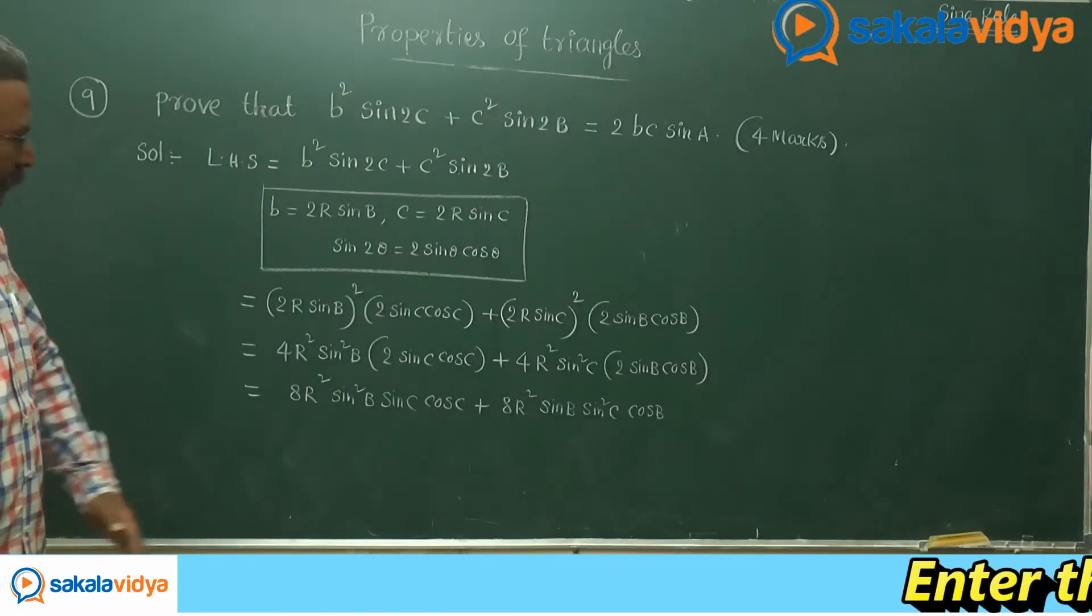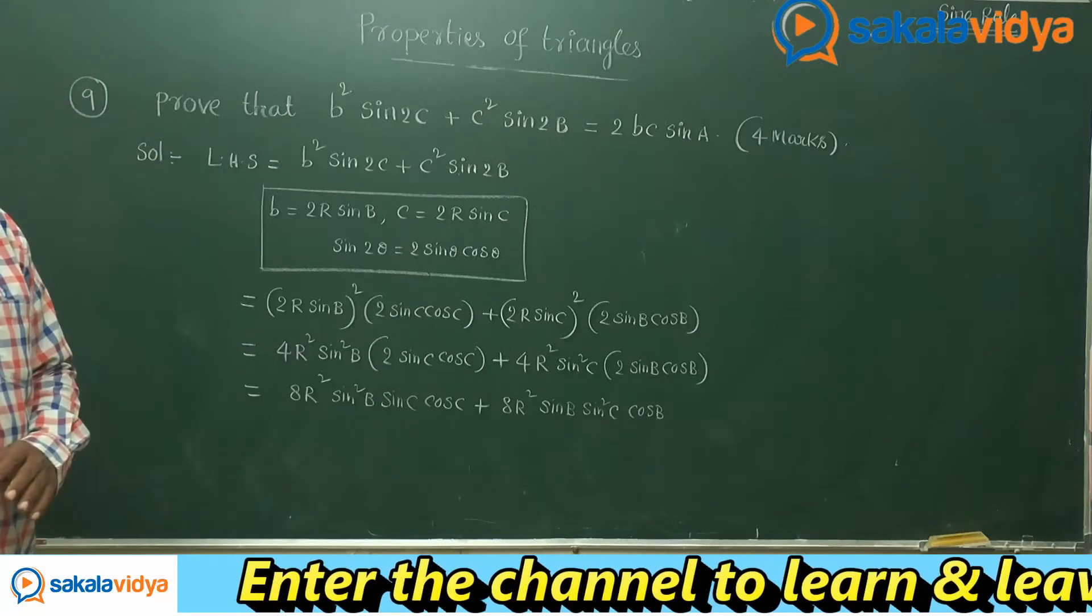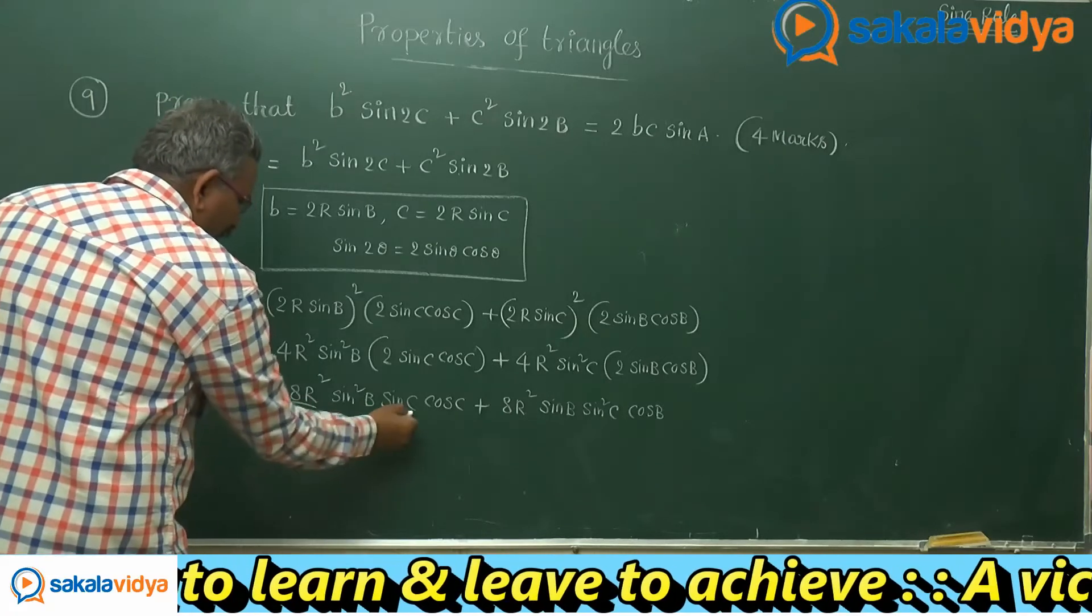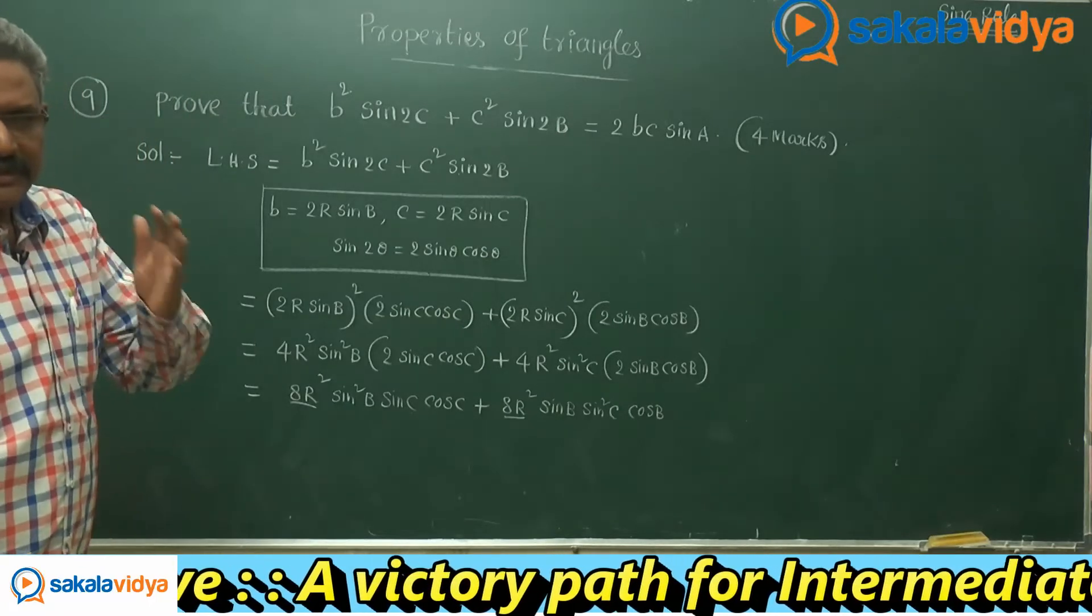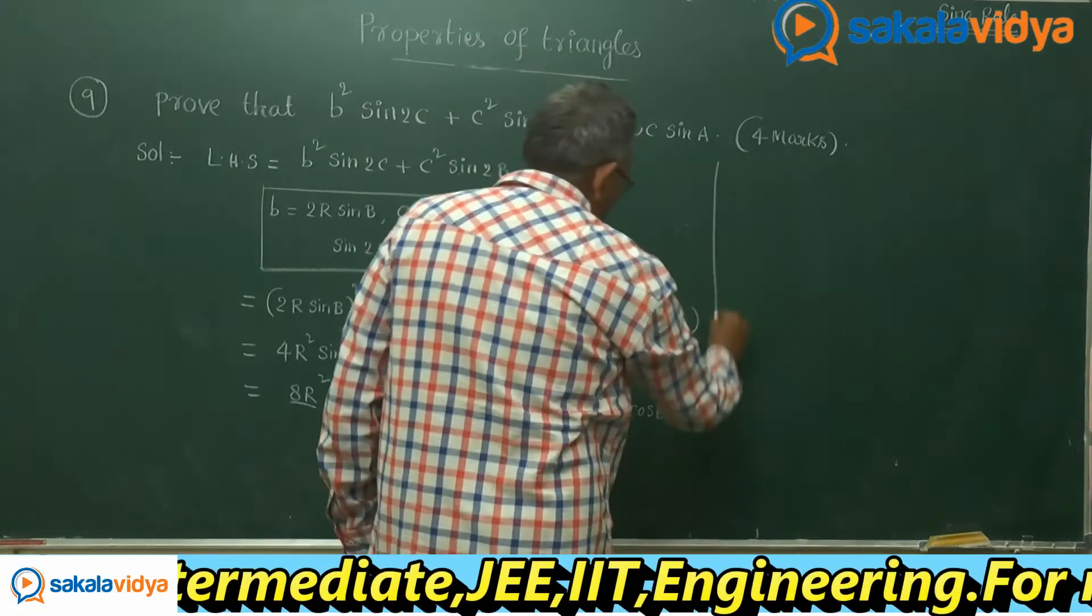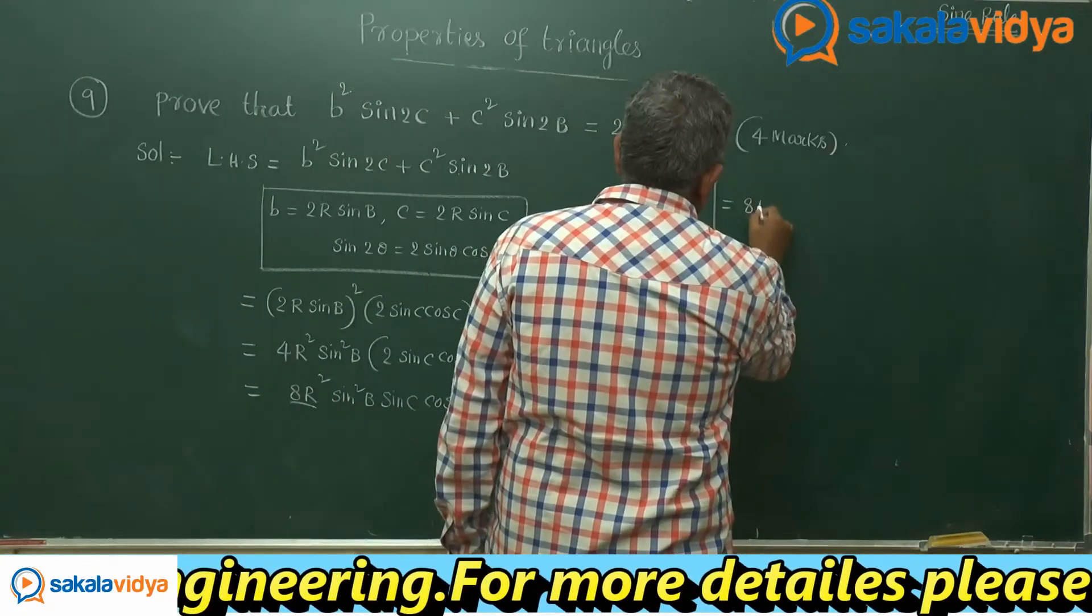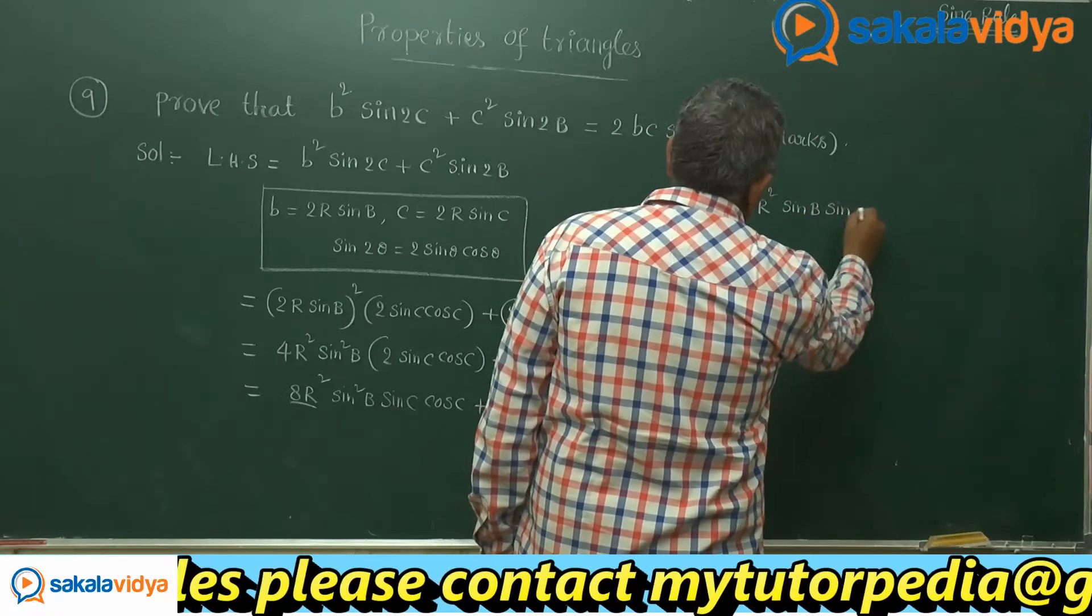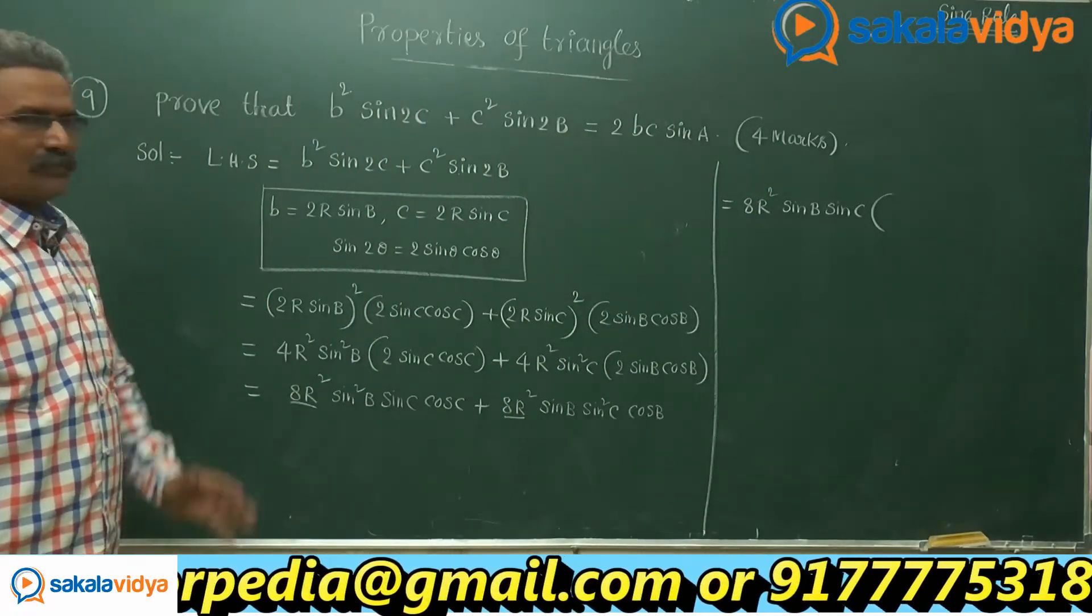Just look for the common factor in both the terms. What is the common factor we have? Yes, 8r squared sin b sin c. Let us take out 8r squared sin b sin c common. If you take 8r squared sin b sin c common out, what do you get in the brackets?